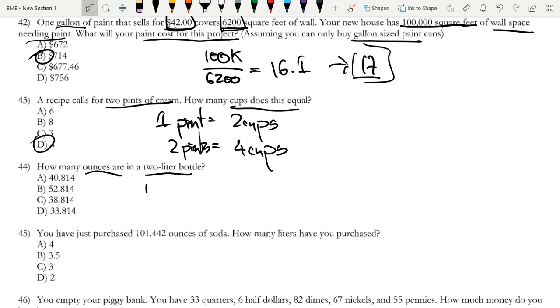One liter is about 34 ounces. One liter is approximately 34 ounces. Pretty sure, right? It's like 33.814 is the perfectly correct answer.